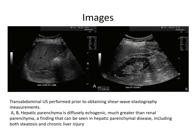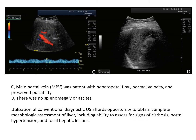These were the ultrasound images showing increased liver echogenicity on transabdominal ultrasound — much greater echogenicity compared to the kidney, a finding seen in hepatic parenchymal disease including both steatosis and chronic liver injury. The main portal vein was patent with hepatopetal flow, normal velocity, and preserved pulsatility on Doppler ultrasound. There was no splenomegaly or ascites. Conventional diagnostic ultrasound provided complete morphologic assessment of the liver, including assessment for signs of cirrhosis, portal hypertension, and focal hepatic lesions, none of which were seen in this case.